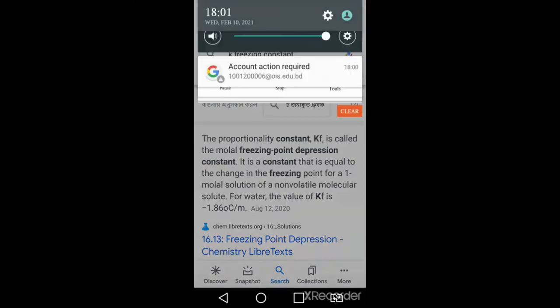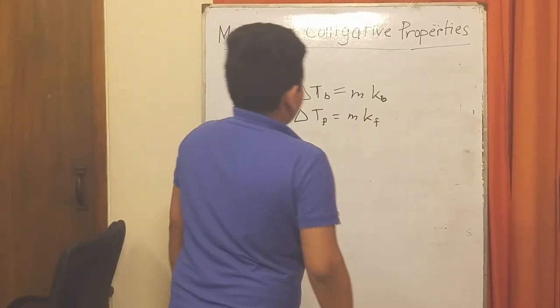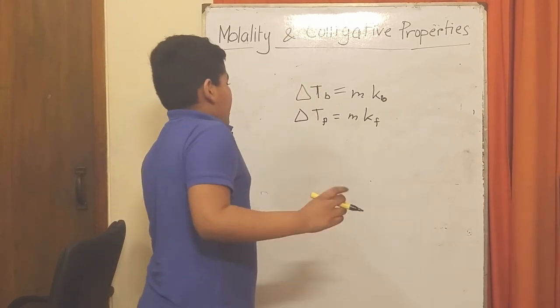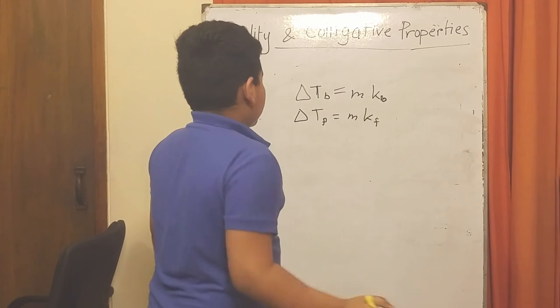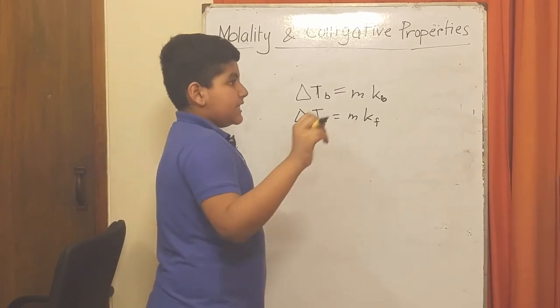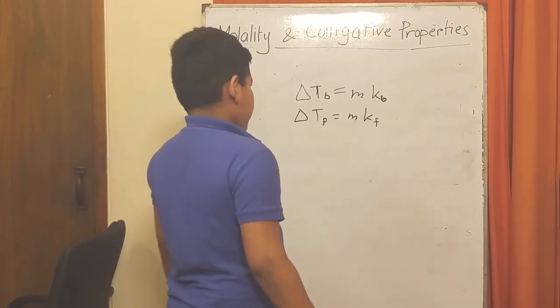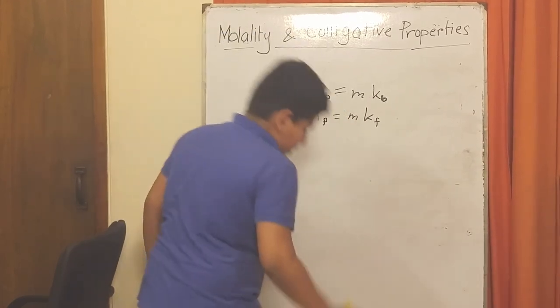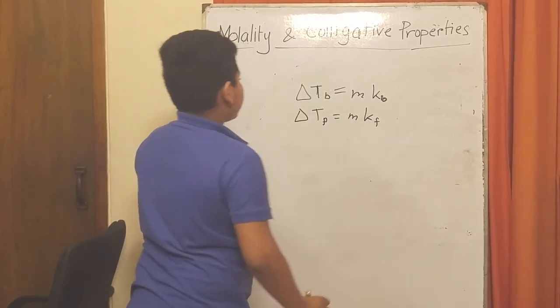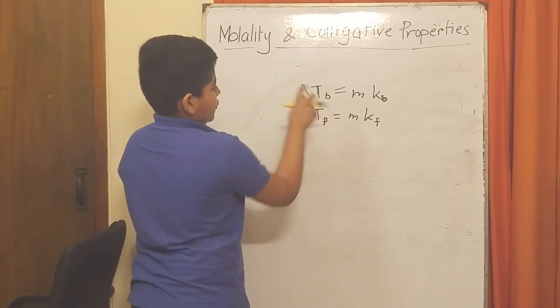As you saw what the constants mean, remember to get the actual temperature of the boiling point, you add the normal boiling point plus the change in the boiling point. Same goes for freezing.